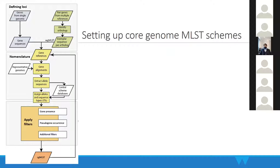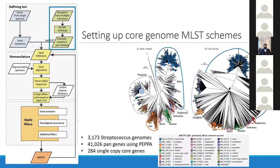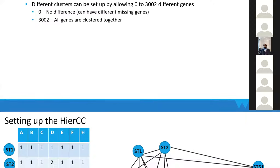To set up a cgMLST scheme you start with either genes from a single genome or from a whole-genome MLST scan, set up reference genes, do a BLAST search, identify and extract sequences, and apply several criteria to decide which genes are suitable. I want to highlight a preprint about a tool called PAPRICA, with which we reconstructed the pan-genome of 3,000 Streptococcus genomes and identified core genes even within a whole genus.